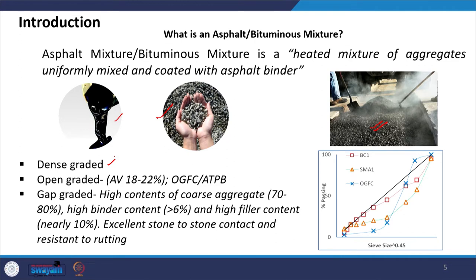Depending on the gradation we can have different types of mix. We can have dense-graded mixtures where the design air void is approximately in the range of 3 to 5 percent. We can have open-graded mixtures such as open-graded friction courses or asphalt-treated permeable base, which have higher void content of around 18 to 22 percent. These are special mixtures designed either to facilitate high permeability of water or to absorb sound in the surface layer. We can also have gap-graded mixtures, where the intermediate size is usually missing, with high coarse aggregate content, high binder content, and high filler content, giving excellent stone-to-stone contact and good resistance to rutting.